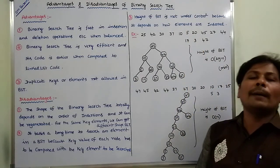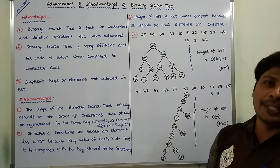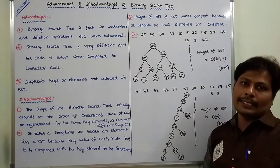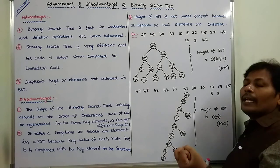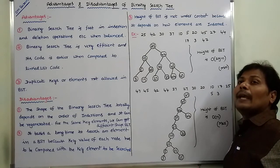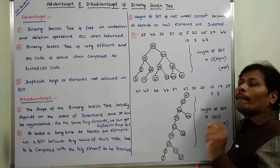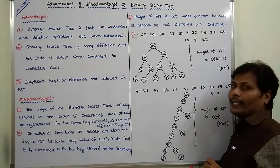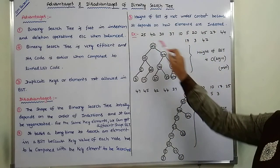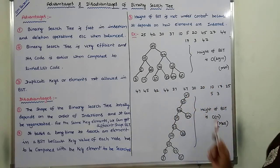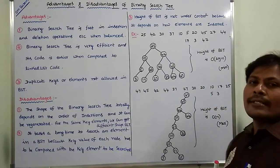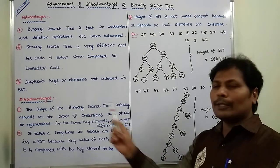Third point: height of the binary search tree is not under control because it depends on how elements are inserted. Height is not under control in the case of a binary search tree because it depends on the way of inserting elements. Consider this example: here 13 elements are inserted, and the same 13 elements are also inserted in a different order.